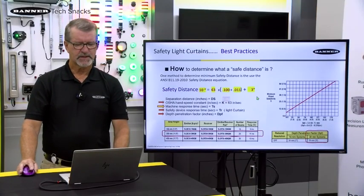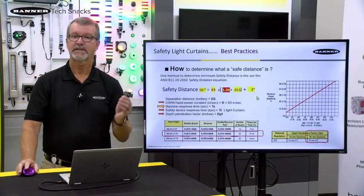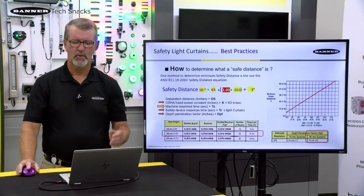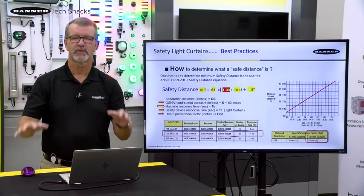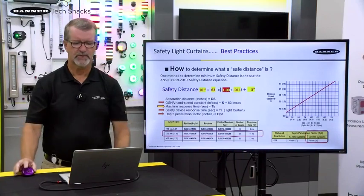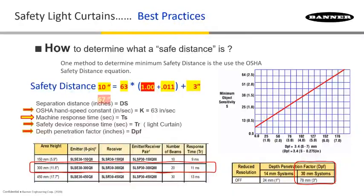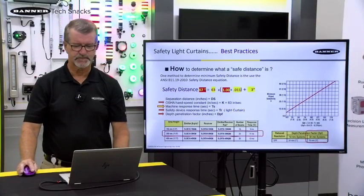Now let's use something longer — one second for the machine stop time. One second seems rather quick, but once you have a one-second time for the machine to shut down, it really changes the overall setback distance. In this case, it's over 5 feet now, just from going from a tenth of a second to a full second.